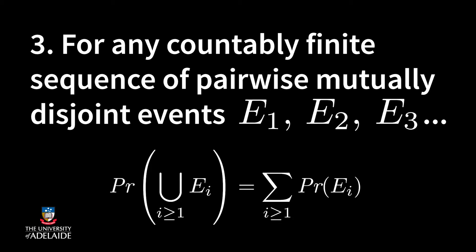3. For any countably finite sequence of pairwise mutually disjoint events E1, E2, E3, and so on, it holds that the probability for the union of events to happen is equal to the sum of the probabilities of the individual events. Let us consider the single die once more.